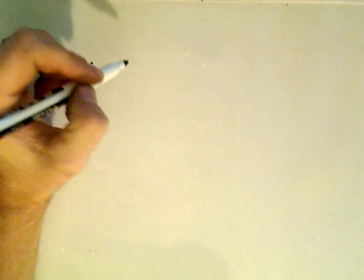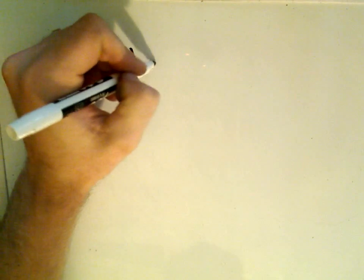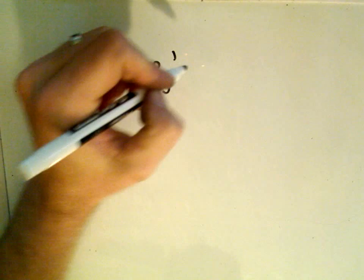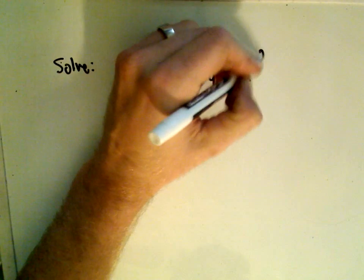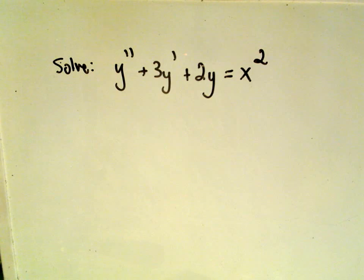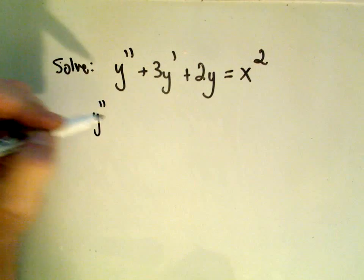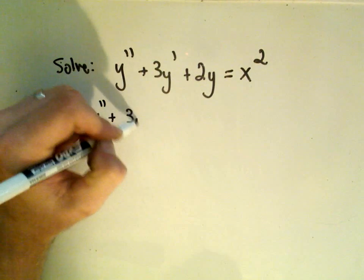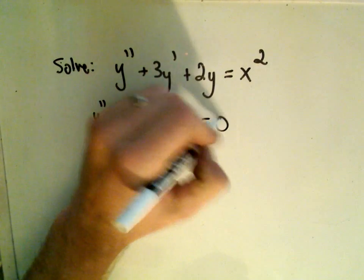Okay, so let's solve this corresponding, let's try to solve this. So we're going to have y double prime plus 3y prime plus 2y equals x squared. Okay, so the first thing what we're going to do, again, is just turn this into our complementary equation, and we're going to solve, first off, y double prime plus 3y prime plus 2y equals 0.